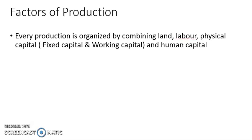We can now define factors of production: every production is organized by combining land, labor, physical capital — which includes fixed capital and working capital — and human capital. These are known as the factors of production.